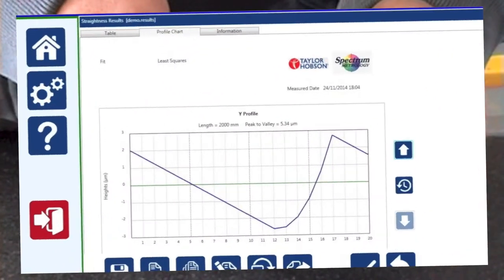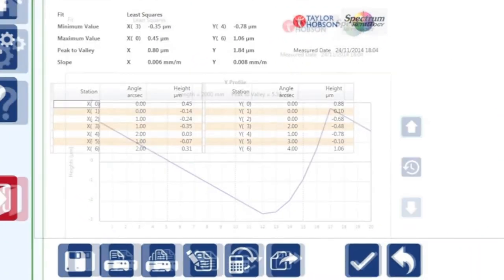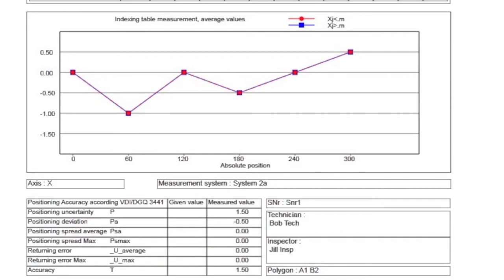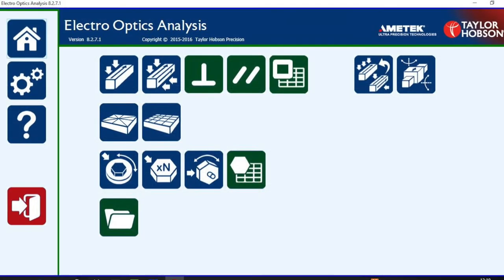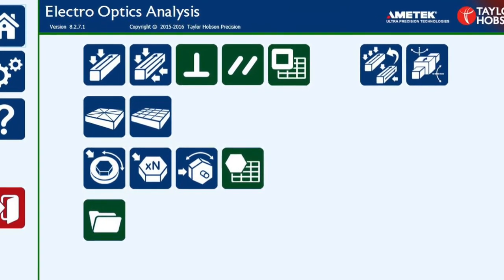We also offer simple intuitive software for these products that will give you information on straightness measurement, flatness measurement, and polygon measurement. This software is provided as standard with the ultra autocollimator already loaded on the tablet PC.